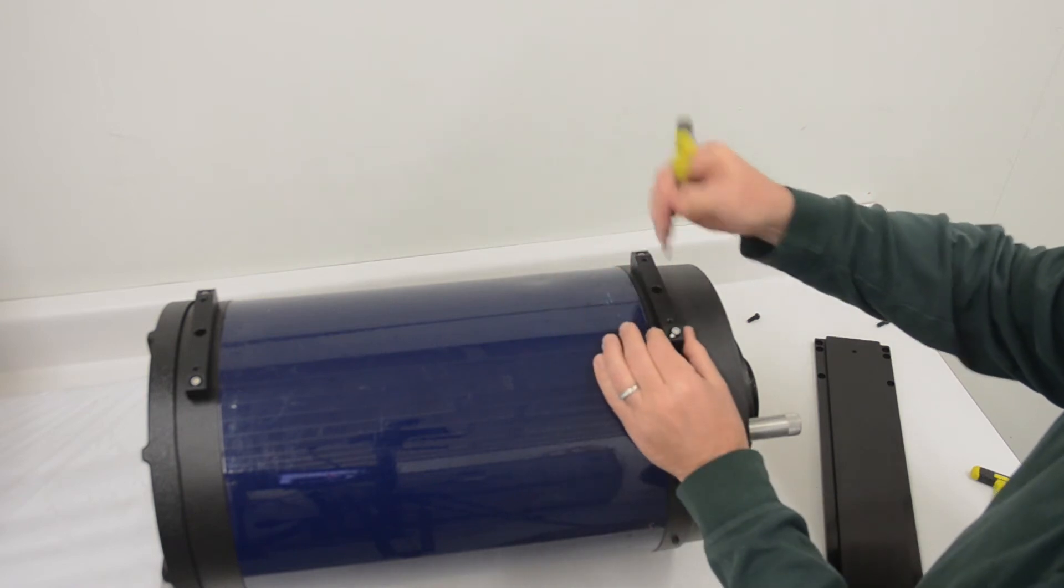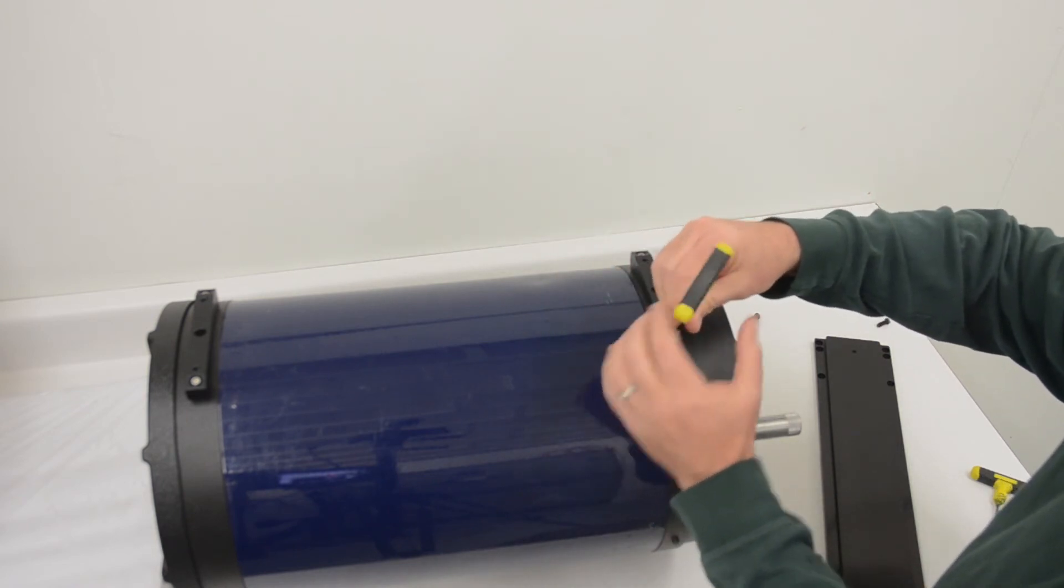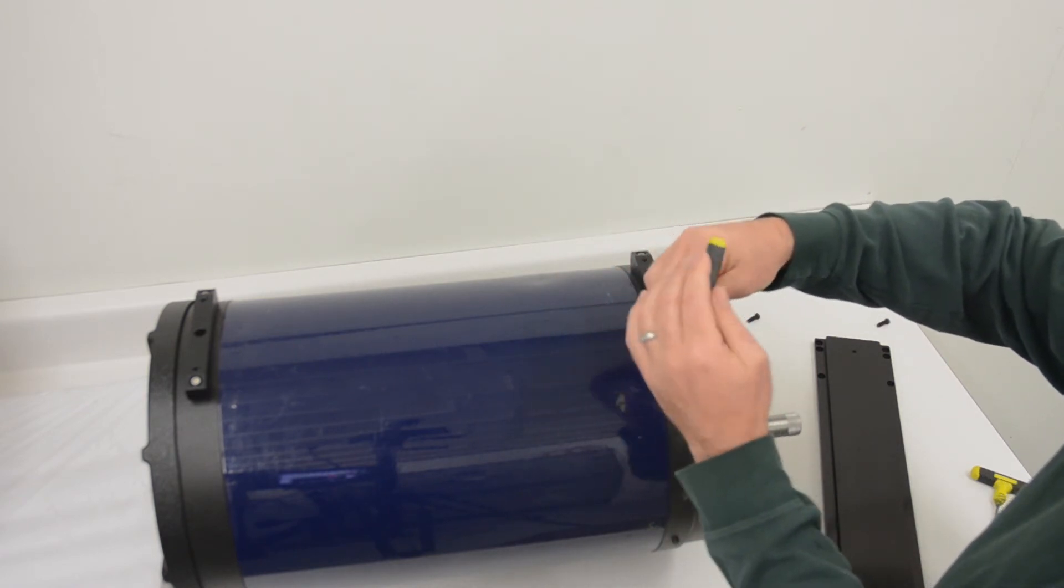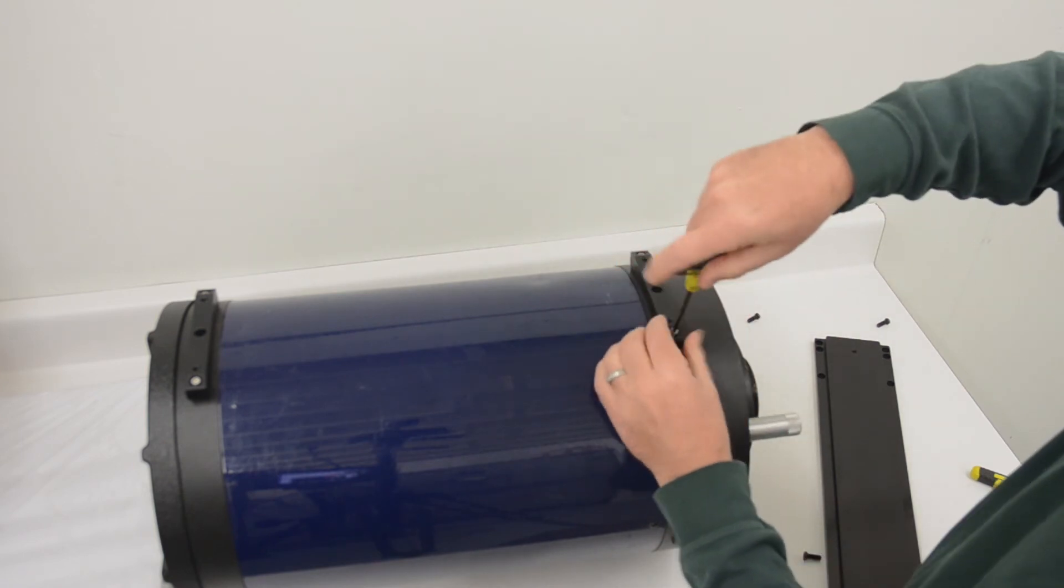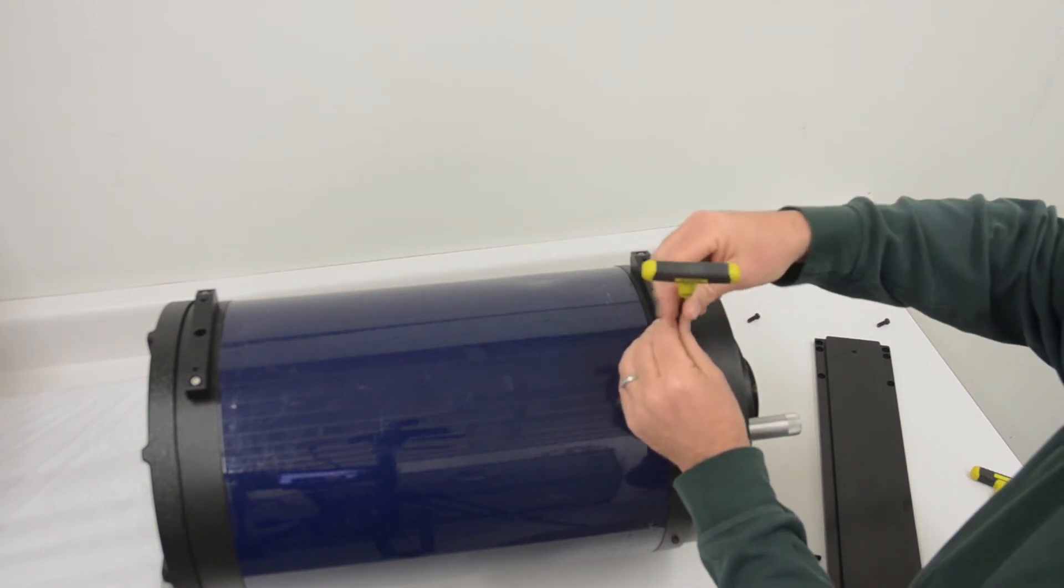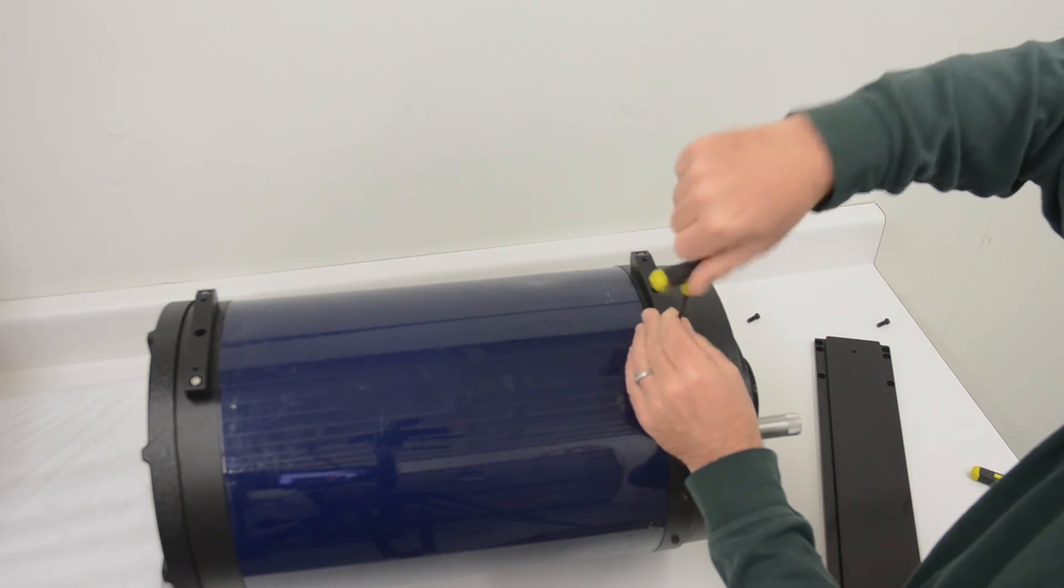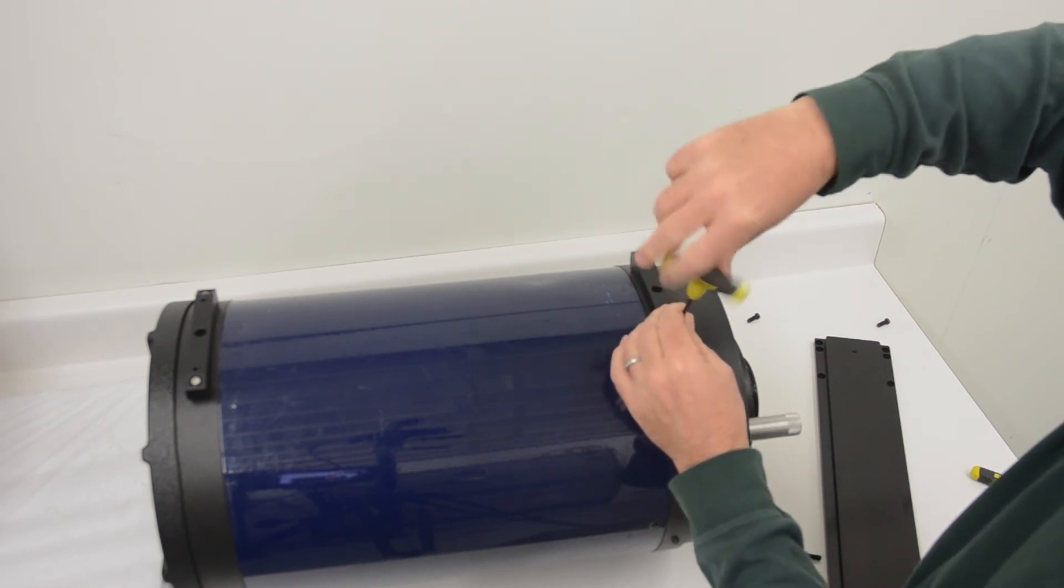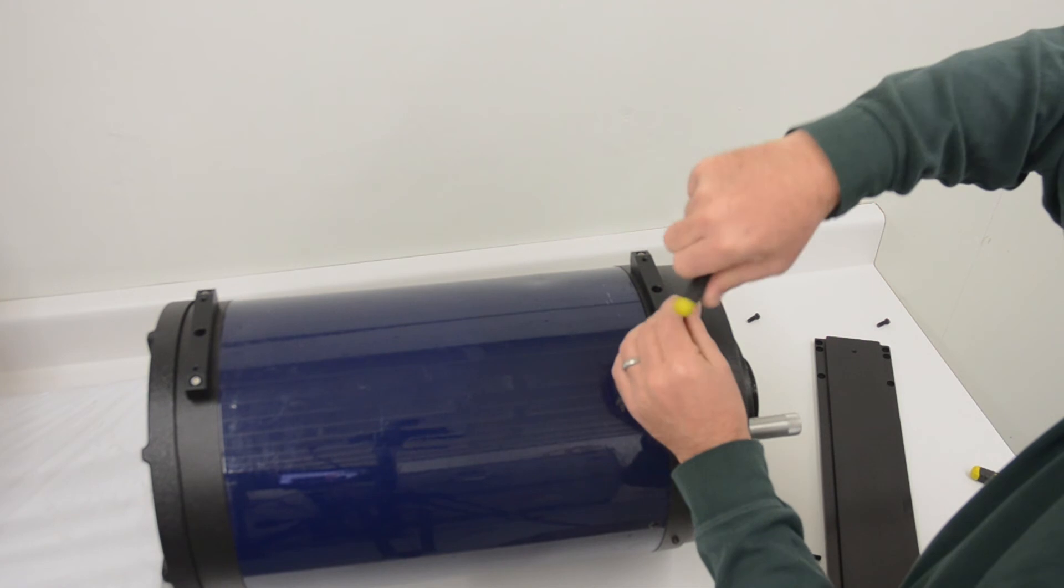It is important to use the correct radius blocks. Many radius blocks look alike but they do not fit alike. Radius blocks are specific to the OTA and are not interchangeable. Sometimes the parts may vary depending on the year that the same brand and size OTA was manufactured.